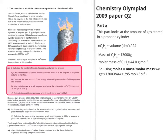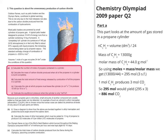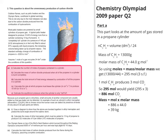Then it asks you to calculate the mass of carbon dioxide produced when all of the propane in a cylinder is burnt completely. Using the mole ratio of the complete combustion of propane, one mole of propane has three moles of carbon, so you get three moles of carbon dioxide. Therefore 295 moles would yield 886 moles of carbon dioxide. Doing a quick rearrangement, that gives us 39 kilograms of carbon dioxide.